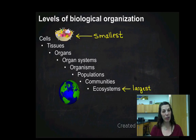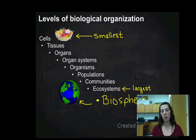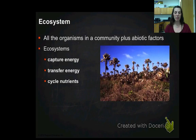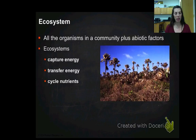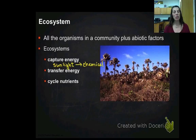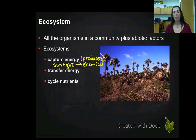The ecosystem is the largest level we're going to look at today. There is a level above ecosystem, which is the biosphere — everything on the entire planet — but we're not going to talk about that today. An ecosystem is defined as all of the organisms in a community plus all of the abiotic factors in that community. When we talk about ecosystems, we need to focus on how the ecosystem captures energy — meaning how producers capture sunlight and convert it through photosynthesis.